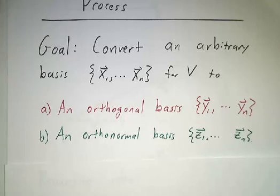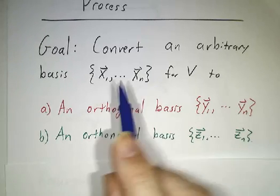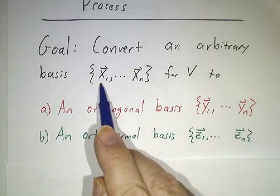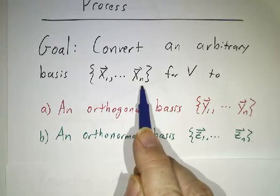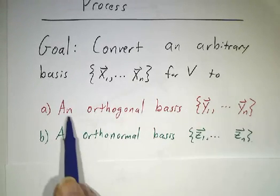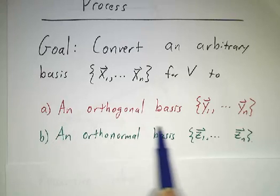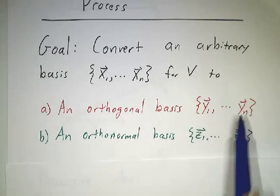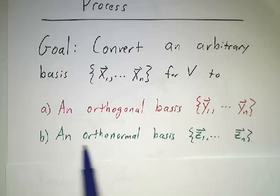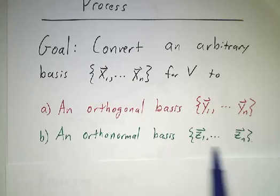So we have a systematic formula for taking any old basis, I'm going to call the original basis x1 through xn for an n-dimensional space, and first converting it to an orthogonal basis, which I'll call y1 through yn, and then converting the orthogonal basis to an orthonormal basis, which I'll call z1 through zn.